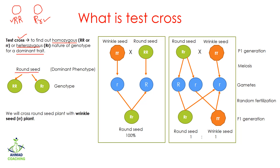Here we have a round shape represented as capital R capital R, which is the dominant homozygous one, and capital R small r, which is heterozygous — the capital R is dominant but small r is also present. To find out which it is, in a test cross we cross our plant with a recessive trait plant. We know that wrinkle seeds always express when they have the homozygous recessive combination, and wrinkle trait is a recessive trait.